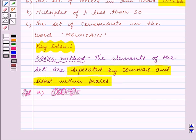So the given set in roster form is {T, O, F, E}. Since the repetition of elements is not allowed in the denotation of a set, we have written each letter only once. So this is the answer for part A.